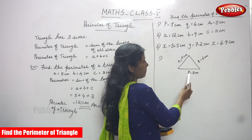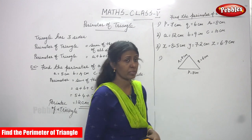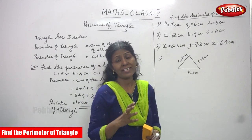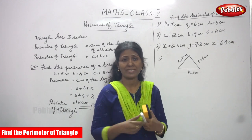So I have drawn the diagram. P is equal to 7 centimeters, Q is equal to 6 centimeters, R is equal to 8 centimeters. So we have to find the perimeter of the triangle. What is the formula of perimeter of the triangle? Sum of all its sides.